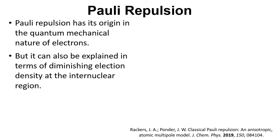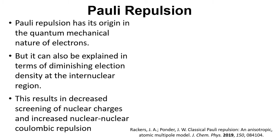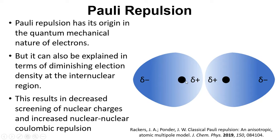But we can also explain this in terms of diminishing electron density at the internuclear region. This results in reduced screening of the nuclear charges and increased nuclear-nuclear Coulombic repulsion. If you think back to this picture here, we've got the positive nucleus, the electron density. If two atoms are being squeezed together and the electron density is reducing in this region,